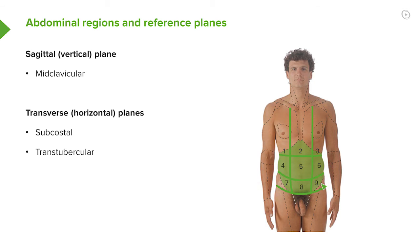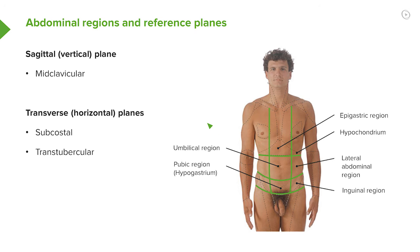If pain is radiating in one of these regions, you have a good idea of which organ lies beneath it. In the midline, we have what's known as the epigastric region. Deep to that, by the umbilicus, we have the umbilical region. Inferior to the umbilical region again, we find the pubic region. So we have epigastric, umbilicus, and pubic region.